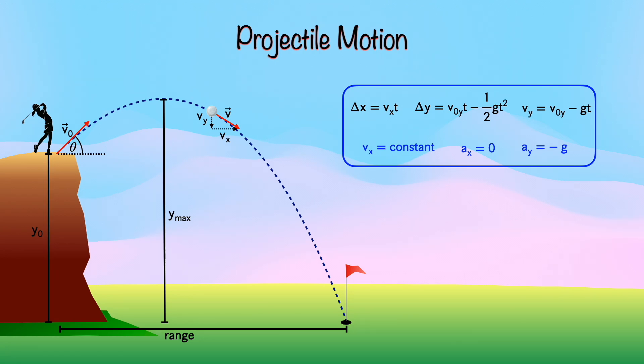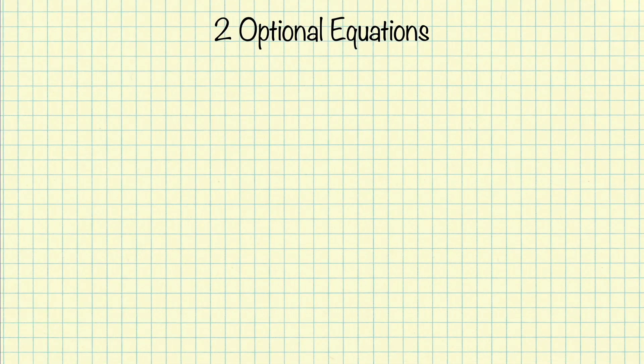Having said that, there are two optional equations you could add that might be useful, and they just come from combining two of the three black equations. For the first one, we're going to combine the x position equation and the y position equation. First thing we're going to do is that we're going to solve this equation for time. Solving for time gives us that time equals delta x over v_x.